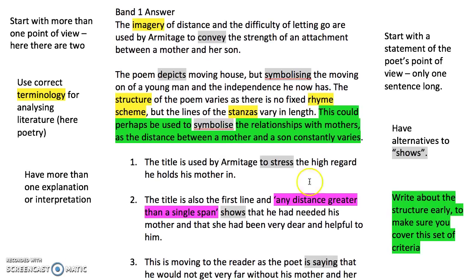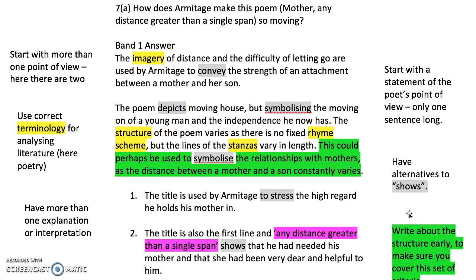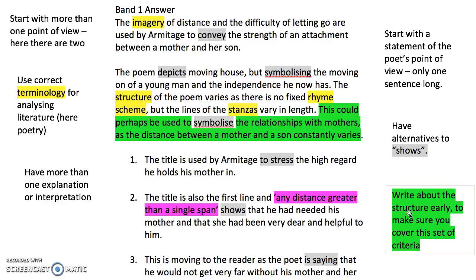Another technique this writer has used - a really clever one - is writing about structure early on. It's really easy when you're quoting to just write about language, and all mark schemes have a mark for structure and form. This candidate has said: 'I'm going to write about structure almost in my first paragraph,' because then they know they're scoring marks for that. That's a really top tip.